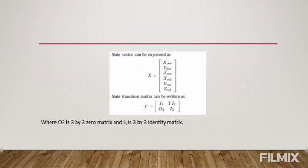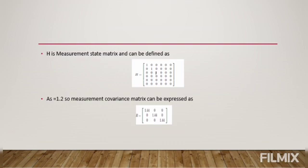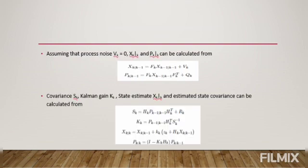First, we define the state vector and the state transition matrix. The state vector is 6×1, containing X position, Y position, Z position, X velocity, Y velocity, and Z velocity. The state transition matrix is defined as [I3, T*I3; O3, I3], where I3 is the 3×3 identity matrix, O3 is the 3×3 zero matrix, and T is the sampling time. H is the measurement state matrix. Since the variance is 1.2, the measurement covariance matrix R is defined with diagonal values of 1.44 (which is 1.2 squared).